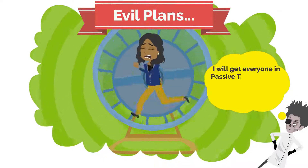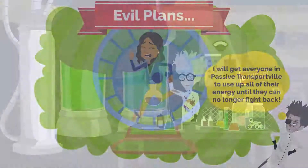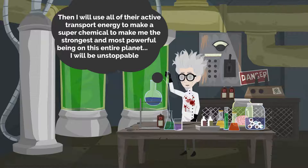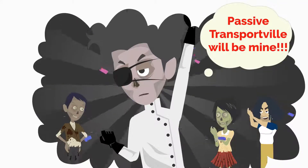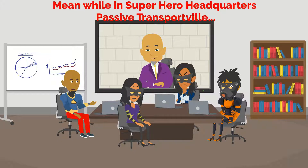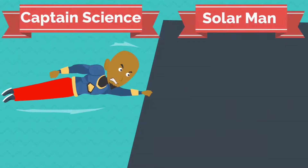I've got it! I will get everyone in Passive Transportville to use up all of their energy until they can no longer fight back. Then I will use all of their active transport energy to make a super chemical to make me the strongest and most powerful being on this entire planet. I will be unstoppable — Passive Transportville will be mine! Fellow science heroes, I have just received word that Dr. Drane has schemed up another evil plan. This time he plans to use his active transport machine to drain the energy from all of the citizens of Passive Transportville and use that energy to create a chemical to make him the most powerful being in the world. He must be stopped at all costs. Who's with me? Captain Science and Solar Man to the rescue!